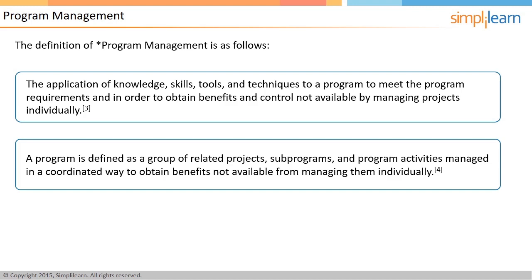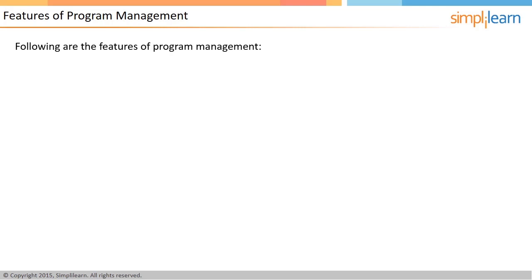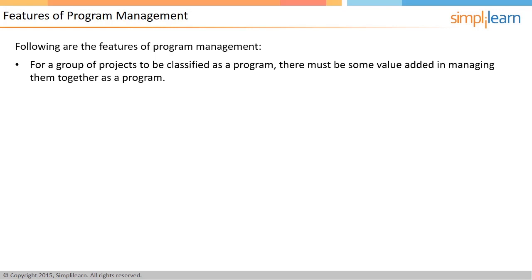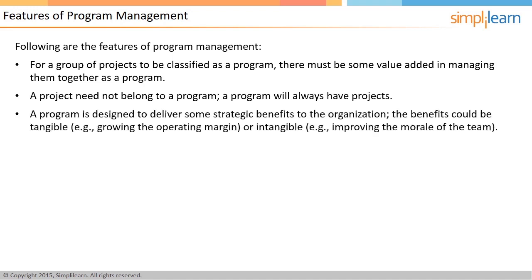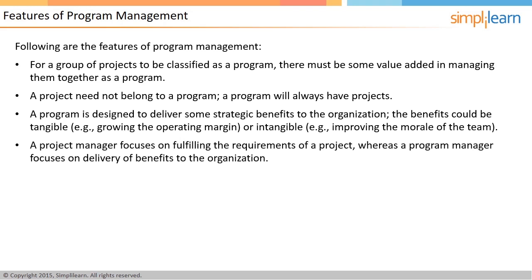Random projects cannot be grouped together as a program. The projects in a program should be related in some way and there should be some value added in managing them together. A project may not be a part of any program, but a program will always have projects. A program is designed to deliver strategic benefits and value to the organization. These benefits can be tangible — such as increased profit margins or operational cost savings — or intangible, such as improved team morale or building competencies. While a project manager focuses on scope, cost, time, and quality, a program manager needs to focus on ensuring that the organizational benefits are realized.